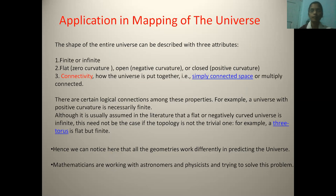Now, application in the mapping of the universe. The shape of the universe can be described with three attributes, such as finite or infinite, flat with zero curvature, open with negative curvature, or closed with positive curvature. And also from the connectivity. There are certain logical connections among the properties. The universe with positive curvature is necessarily finite. Means, if we apply spherical geometry for the universe, then it becomes finite. And if we apply the hyperbolic geometry, means negative local geometry, then it will be infinite.